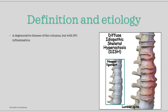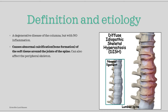DISH is a degenerative disease of the vertebrae, but there is no inflammation. This is a very important difference to differentiate it from ankylosing spondylitis. The main thing to know about DISH is that there occurs abnormal calcification of the soft tissue around the joints in the spine. This calcification leads to fusion of the spine, so it has some similar symptoms as Bechterev's disease. It can also cause calcifications around other bones throughout the body as well.